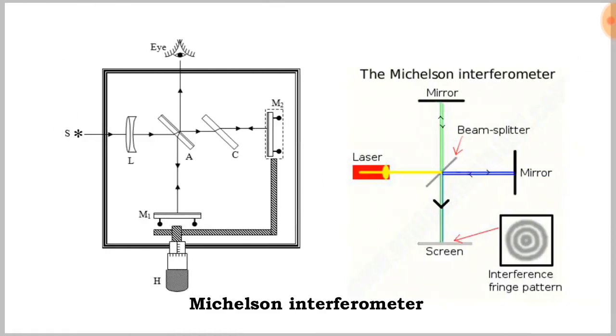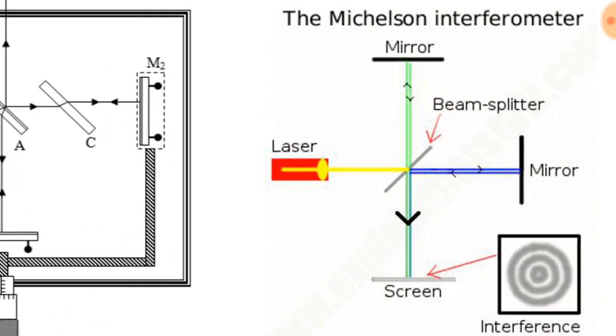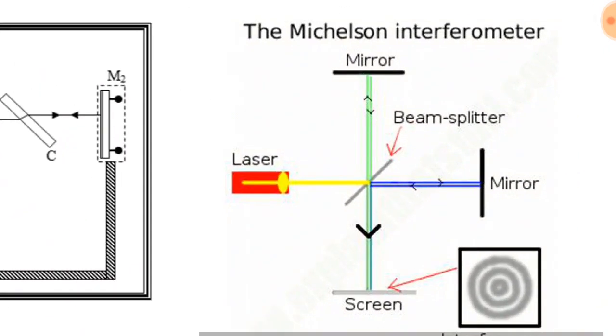This is the diagram showing the interferometer. This is a simple diagram. A laser beam falls on a beam splitter.